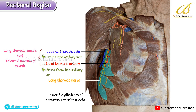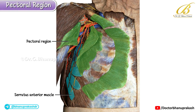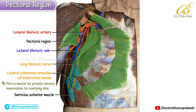Here the vein drains into the axillary vein while the artery arises from the axillary artery. In this specimen we are looking at a lateral dissection of the pectoral region highlighting the serratus anterior muscle along with its associated neurovascular bundle. The long thoracic nerve is clearly visible running along the lateral chest wall, accompanied by the lateral thoracic artery and vein. Notice the small nerve twigs passing through the serratus anterior — these are the lateral cutaneous branches of the intercostal nerves, which pierce the muscle to provide sensory innervation to the overlying skin.